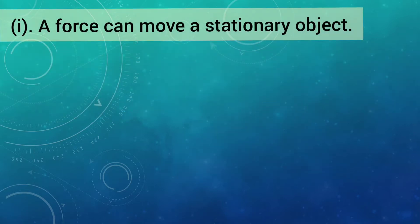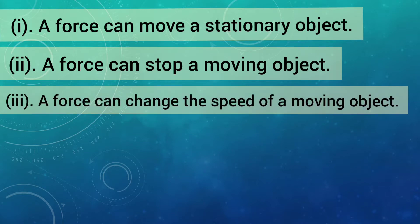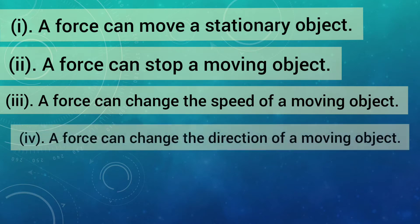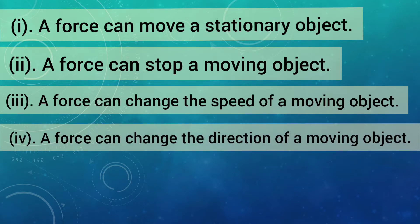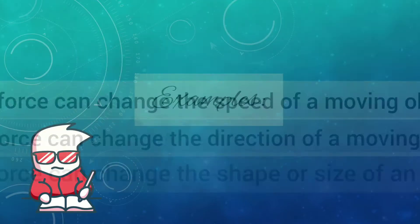A force can move a stationary object. A force can stop a moving object. A force can change the speed of a moving object. A force can change the direction of a moving object. A force can change the shape or size of an object. Now let us try to understand all these effects through some examples.